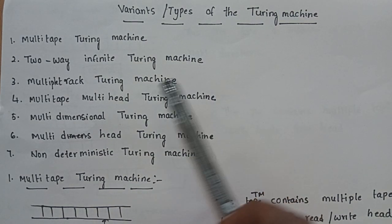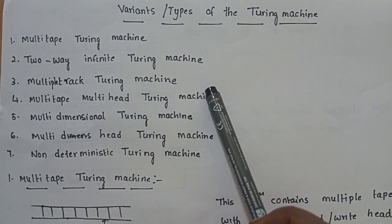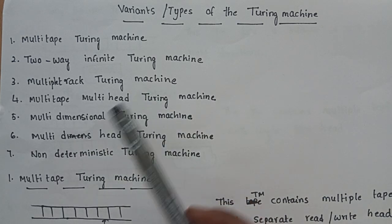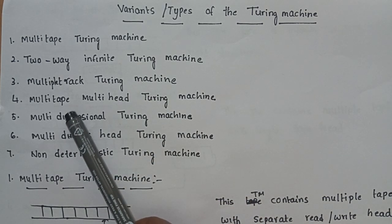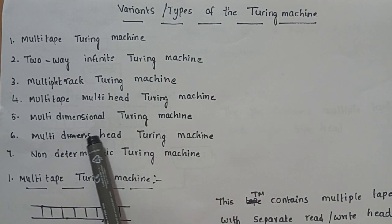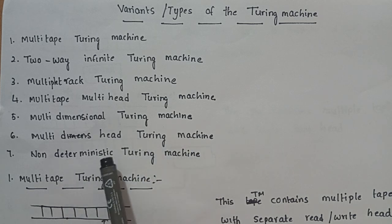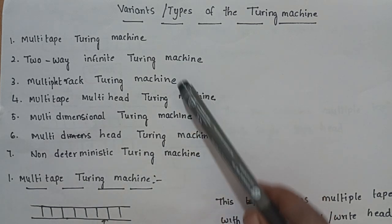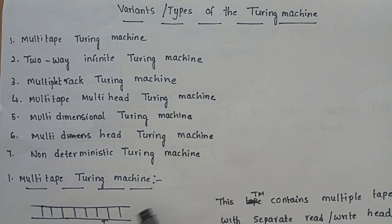The different types of Turing Machine variants are: Multi-Tape Turing Machine, Two-Way Infinite Turing Machine, Multiple Track Turing Machine, Multi-Tape Multi-Head Turing Machine, Multi-Dimensional Turing Machine, Multi-Headed Turing Machine, and Non-Deterministic Turing Machine. These are all the different types or variants of the Turing Machine.